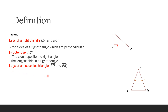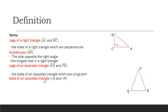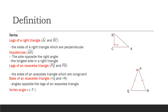The legs of an isosceles triangle — for this isosceles triangle, the legs are PQ and PR. These are the sides of the isosceles triangle which are congruent. That symbol is a symbol of congruency. The base of an isosceles triangle is segment QR. The vertex is angle P — this is the vertex. Angle P is the angle opposite the base of an isosceles triangle.